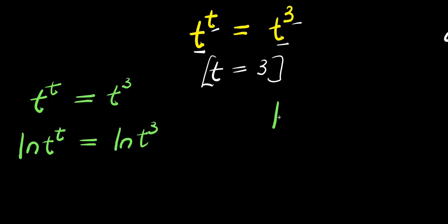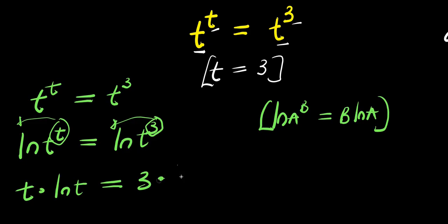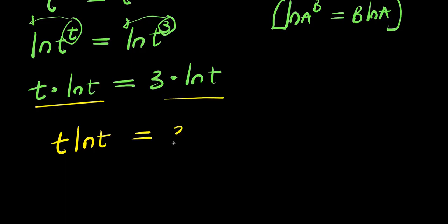Now if you have ln of a to the power b, this equals b times ln of a. So the t comes in front of the ln, the 3 comes in front of the ln, so you have t times ln of t equals 3 times ln of t.